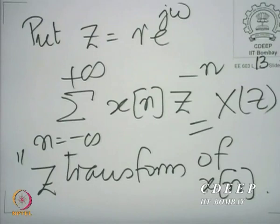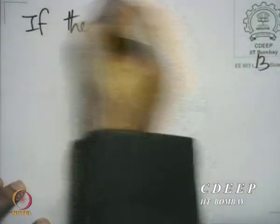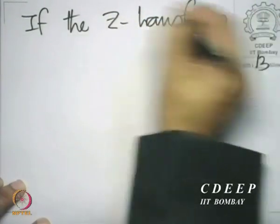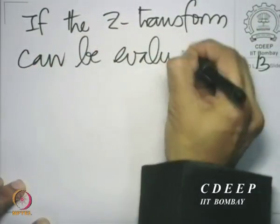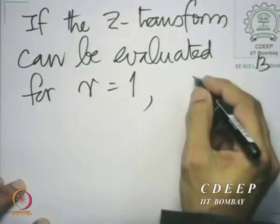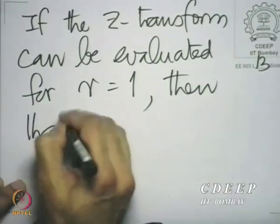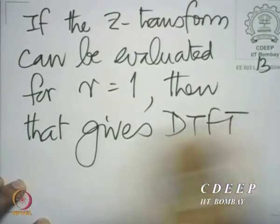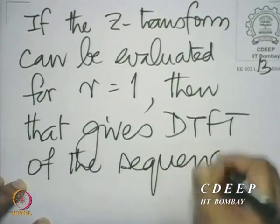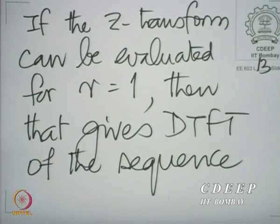The Z-transform, unlike the discrete-time Fourier transform, is a function of a complex variable z, whereas the DTFT was a function of a real variable ω. In a way, there is a relationship between the Z-transform and the DTFT: if the Z-transform can be evaluated for r = 1, then that gives us the DTFT. However, it may not always be possible to evaluate it — it may not converge.